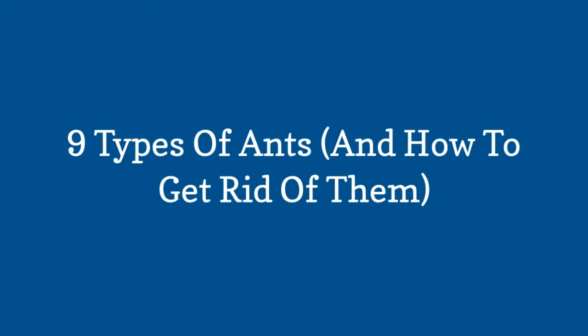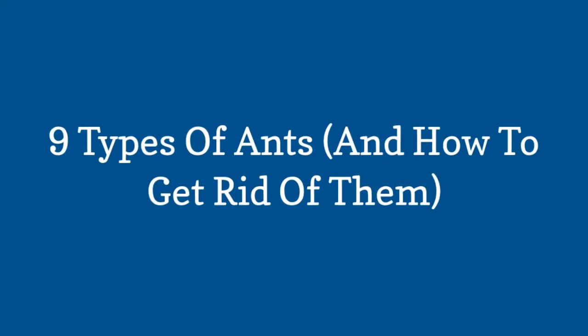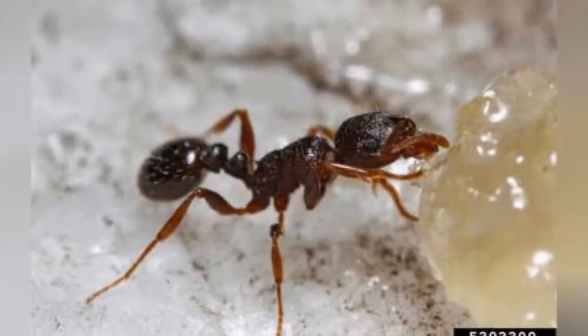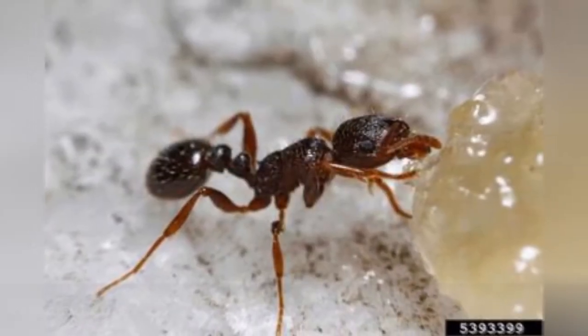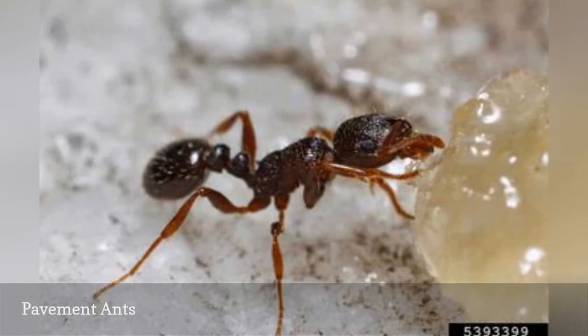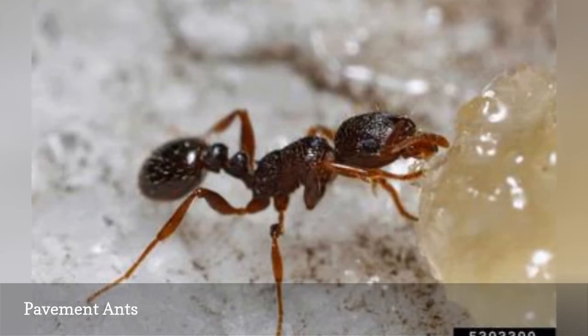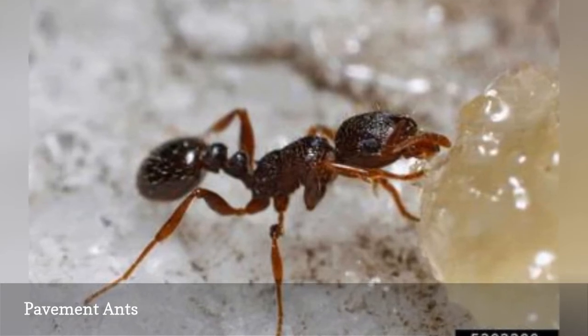9 Types of Ants, and How to Get Rid of Them. The pavement ant is one of the most common ants in the U.S. and is found in all 50 states. It has a brownish-black body and pale-colored legs and can be distinguished by the two spines at the end of its thorax between its body parts.